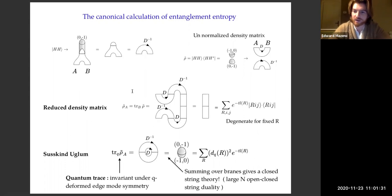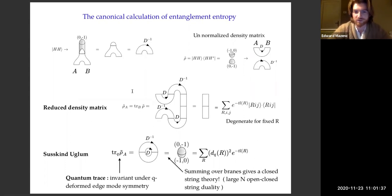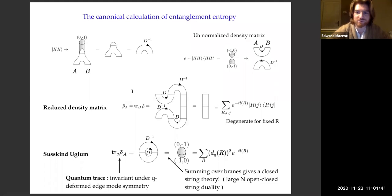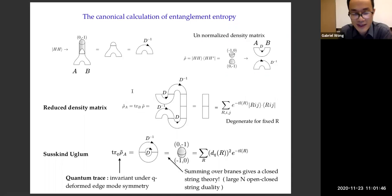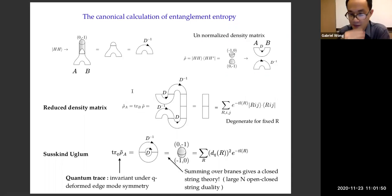Clarification: this isn't exactly Susskind-Ogburn because the original argument was about worldsheet diagrams where the sphere diagram gives a factor of 1/g_string^2, whereas here we're doing target-space, second-quantized string field theory calculations. This is a generalization that includes those sphere diagrams and all diagrams. It doesn't map everything onto a single worldsheet diagram.